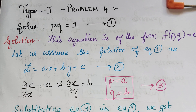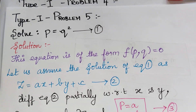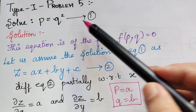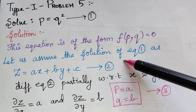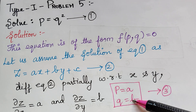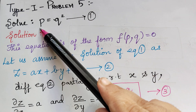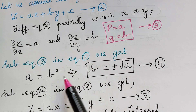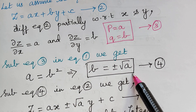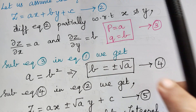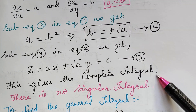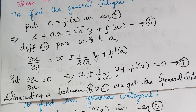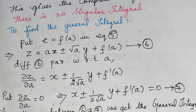Problem 5 involves the same steps. The given equation is p = q², marked as equation 1. Following the usual steps, we substitute p = a and q = b to get a = b², from which b = plus or minus √a. Taking this and substituting in equation 2, we get the complete integral. There is no singular integral, and the general integral is obtained in the same procedure.